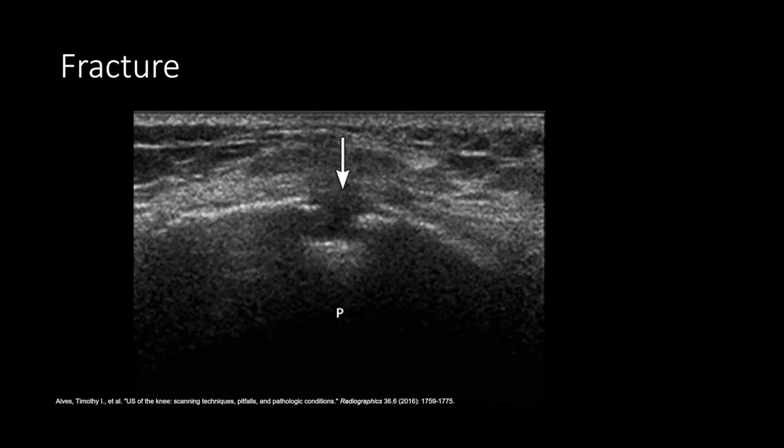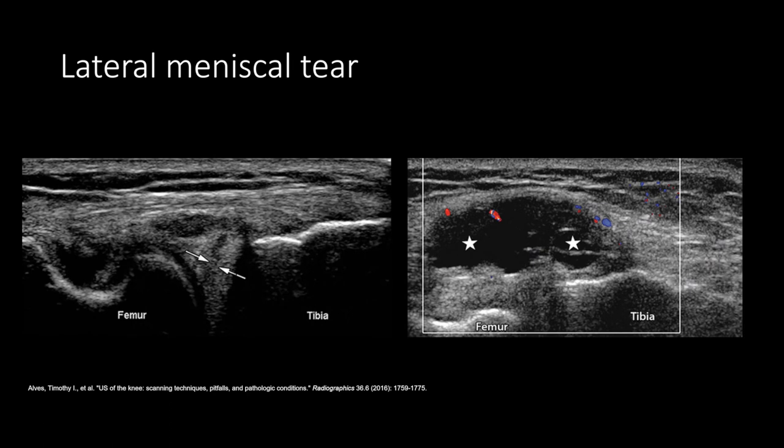This is a patellar fracture. The longitudinal ultrasound image shows the anterior patella with a focal cortical defect. Ultrasound isn't usually great for looking at the menisci, but here you can see on the left image a linear hypoechoic defect at the lateral meniscus consistent with a tear. The right image is a more posterior view with color Doppler, and you can see an associated parameniscal cyst.